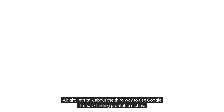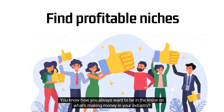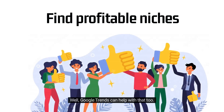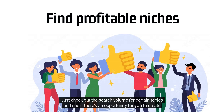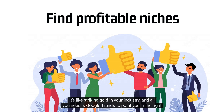Let's talk about the third way to use Google Trends: finding profitable niches. You know how you always want to be in the know on what's making money in your industry. Well, Google Trends can help with that too. Just check out the search volume for certain topics and see if there's an opportunity for you to create products or services around those popular topics. It's like striking gold in your industry, and all you need is Google Trends to point you in the right direction.